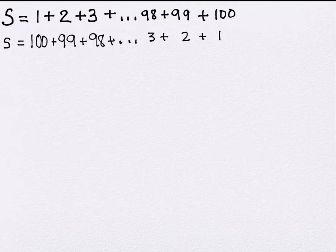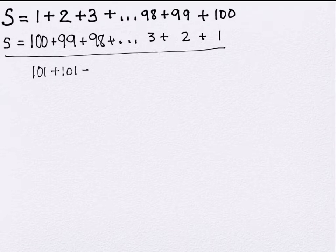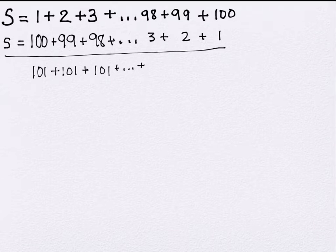Now add the two rows vertically: 1 plus 100 is 101, 2 plus 99 is 101, 3 plus 98 is 101. Do you see a pattern? It continues through the entire list of numbers. Every pair sums to 101, all the way through to the last pair, which also gives 101.